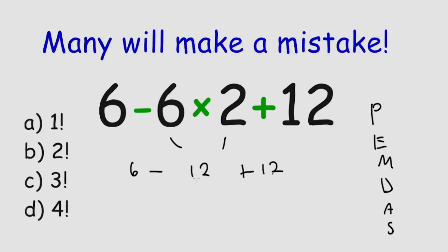So now we have addition and subtraction, and we start from left to right, and so this is minus 6 plus 12, and this is equal to positive 6.